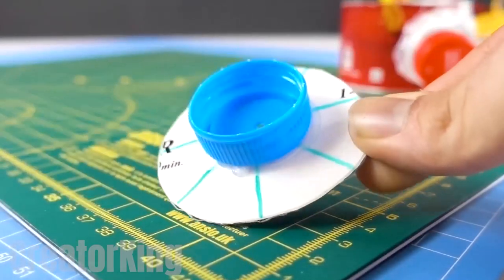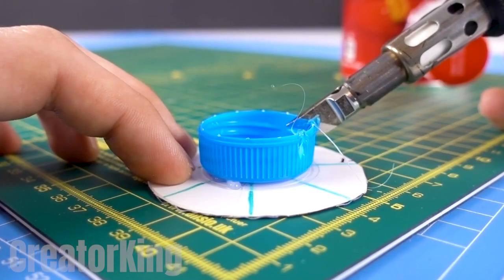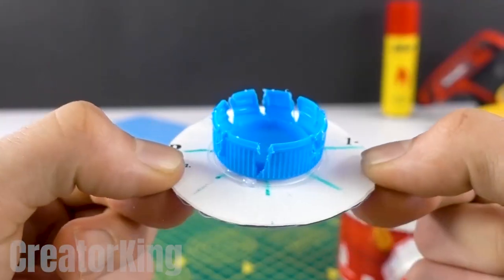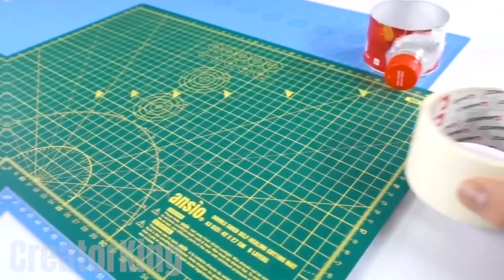With the help of an exacto knife or the box cutter that was heated up earlier, we'll make grooves around the lid that will match up with the marks we made on the disc.